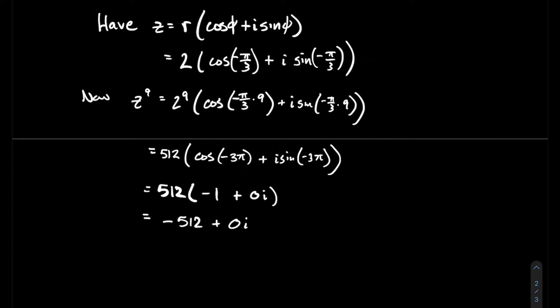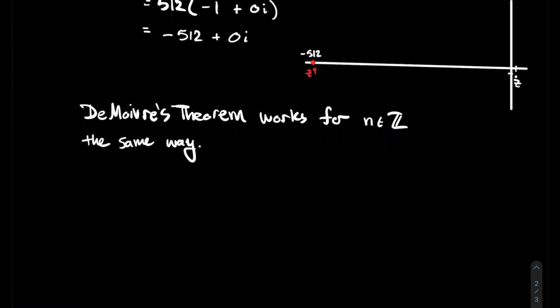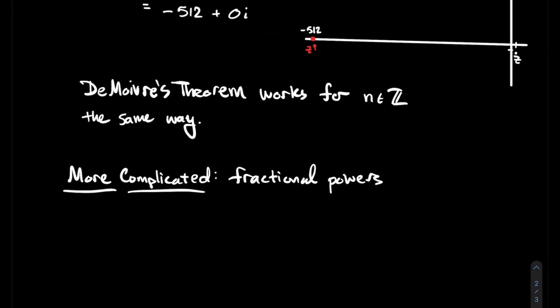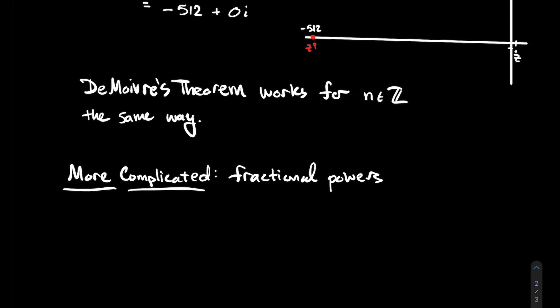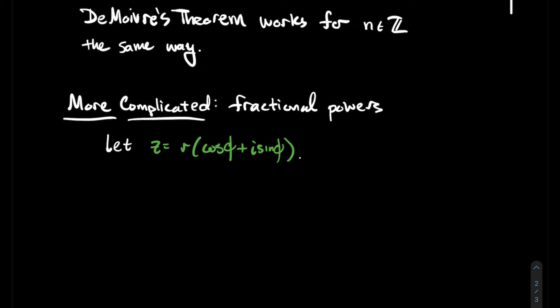You could just think of that as negative 512. I wrote it as plus 0i just so that we're plotting this in the complex plane — these are two points on the real axis, the x-axis. So z to the ninth is way over there to the left. De Moivre's theorem will also work for negative integers as well, and it works the exact same way. But there's a more complicated question: what happens if I want to take fractional powers of a complex number, like a square root or a three-fourths power? We're going to see it's a little bit more tricky, so we need to look at some of the details.